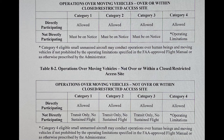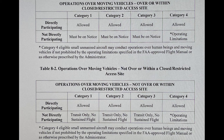Here is a chart from the FAA site. It covers operations over moving vehicles over or within a closed restricted access site, and operations over moving vehicles not over or within a closed restricted access site. This breaks it down simply. It is from the Advisory Circular from the U.S. Department of Transportation, and a link will be in the description below.